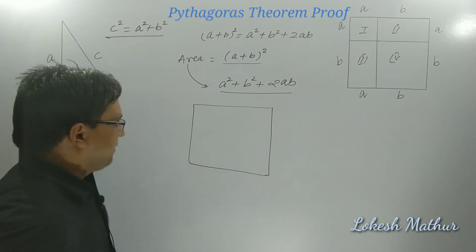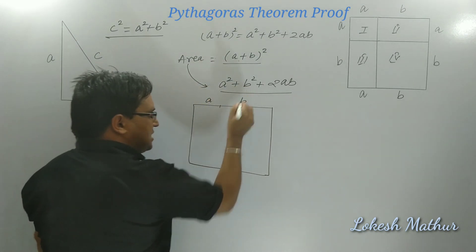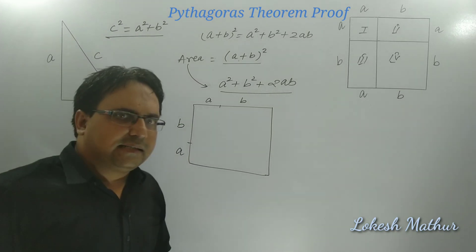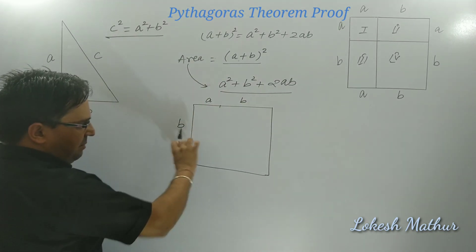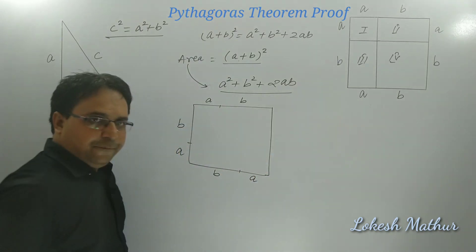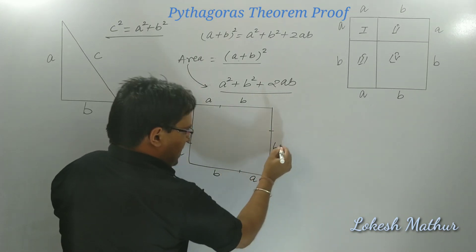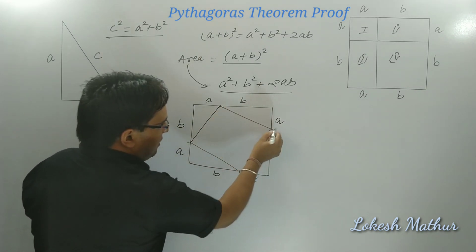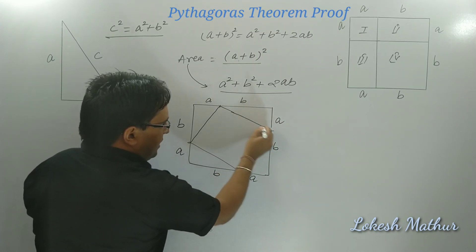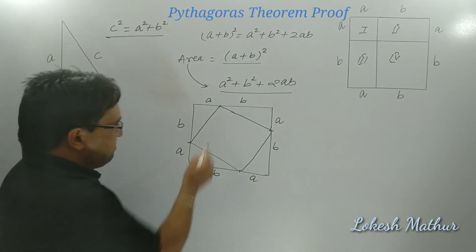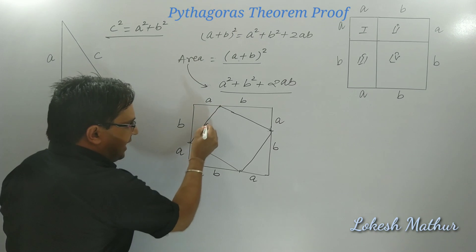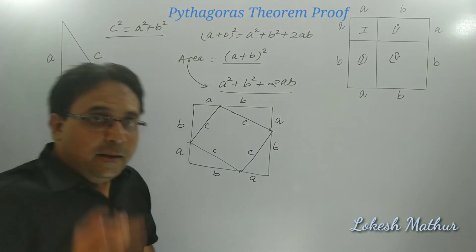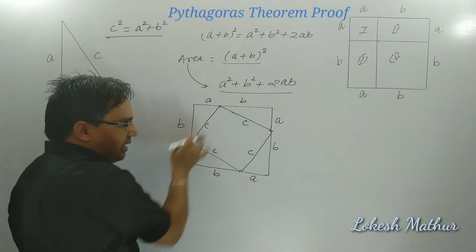I have drawn a square with side A plus B. I will label each side as A plus B — this part is A and this part is B. Since it is a square, all four sides are equal. Inside this square, I have placed four right-angled triangles, each with legs A and B. When these four triangles are arranged inside the square, a smaller square is formed in the center. So we have 4 triangles and 1 inner square formed inside the larger square.